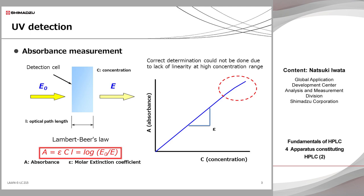The linear relationship between the absorbance and the concentration of the sample compounds is guaranteed up to a certain concentration, so it is important to determine the concentration within this linear relationship range, called dynamic range. If the concentration is too high, the increase in absorbance is saturated, as shown in the graph on the right side. This phenomenon can be understood as a state in which the absorption of light is suppressed, because the sample compounds overlap each other in a cell at a high concentration and the shadow of the preceding molecule interferes with the full excitation of the following molecule.